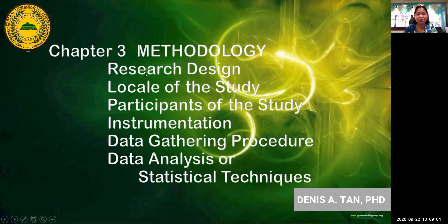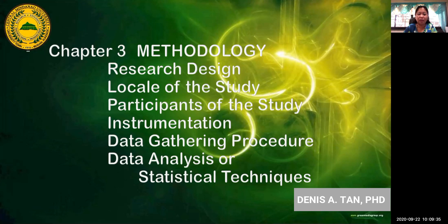You need to research how to best answer your research problem, or what research design you are supposed to use so that you can best answer your research problem. For the locale of the study, you simply write where you are supposed to conduct your study. For participants of the study, you write who among the stakeholders in your institution or locality you are gathering data from. For instrumentation, this is very critical because you need to find valid and reliable questionnaires or instruments in order to gather valid and reliable data.